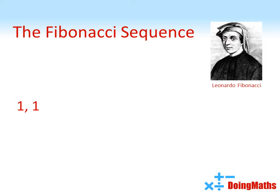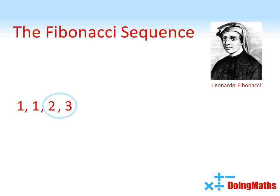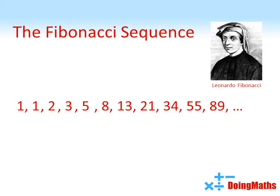So we're starting with two ones. To get the third term we're going to add them together — one add one gives us two. To get the next term we add the one and the two together to give us three. We then add the two and the three together, and so on. Three add five gives us eight. You can check each of those terms is the previous two terms added together.